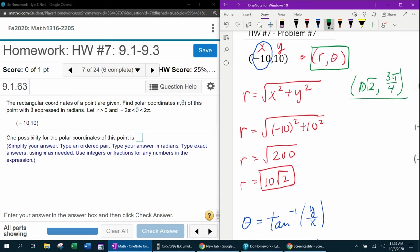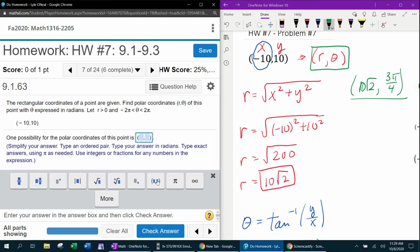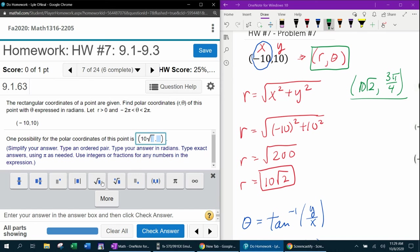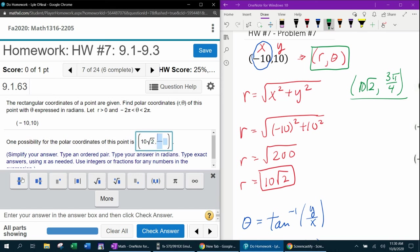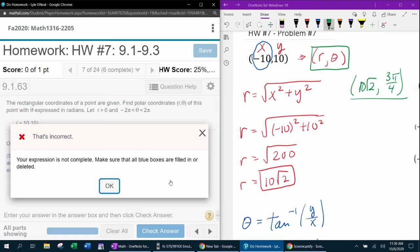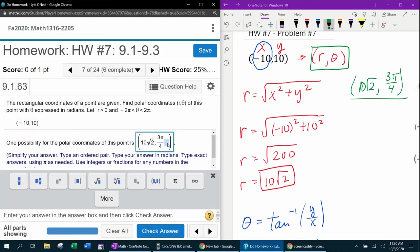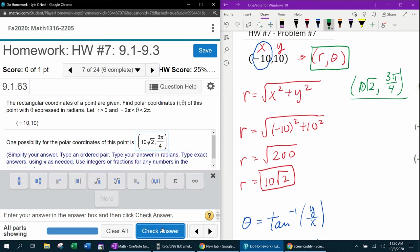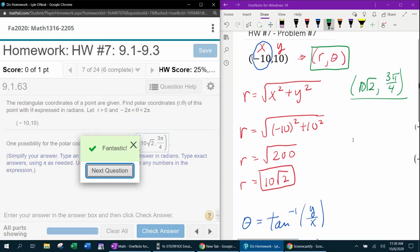That is one correct answer. And it does meet the criteria that the radius is positive and the angle is within the range requested. So we do need to use the ordered pair tool and input this correctly. That is 10 square root of 2. And as a fraction, that's going to be 3 pi over 4. Does that ever happen to you? It didn't put it in the blue box. Silly thing. There you go. It's so picky. And we're done.